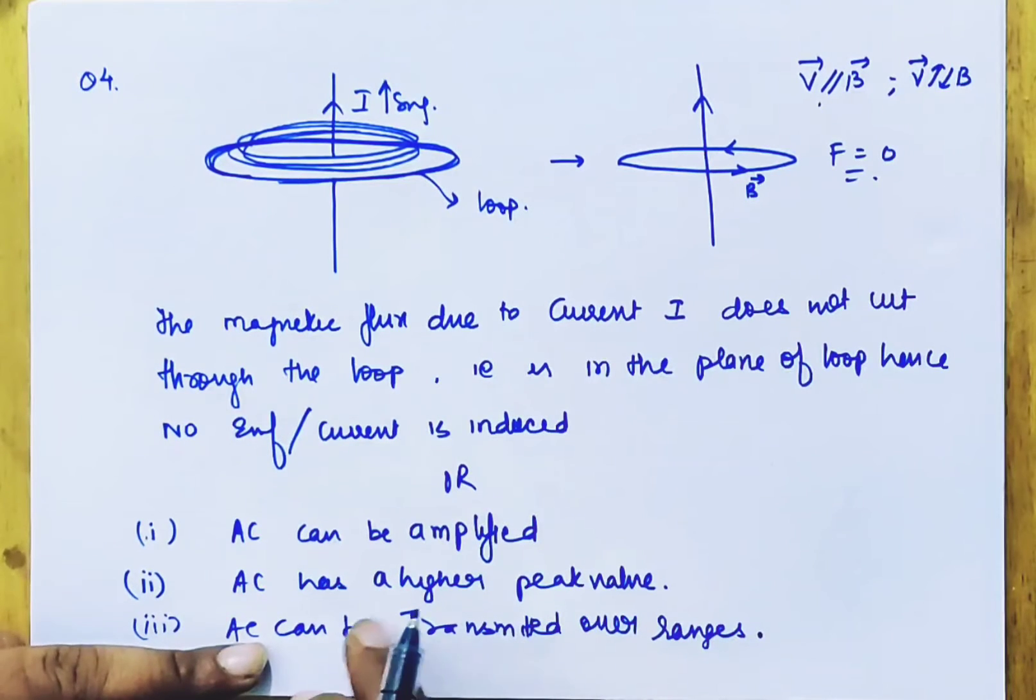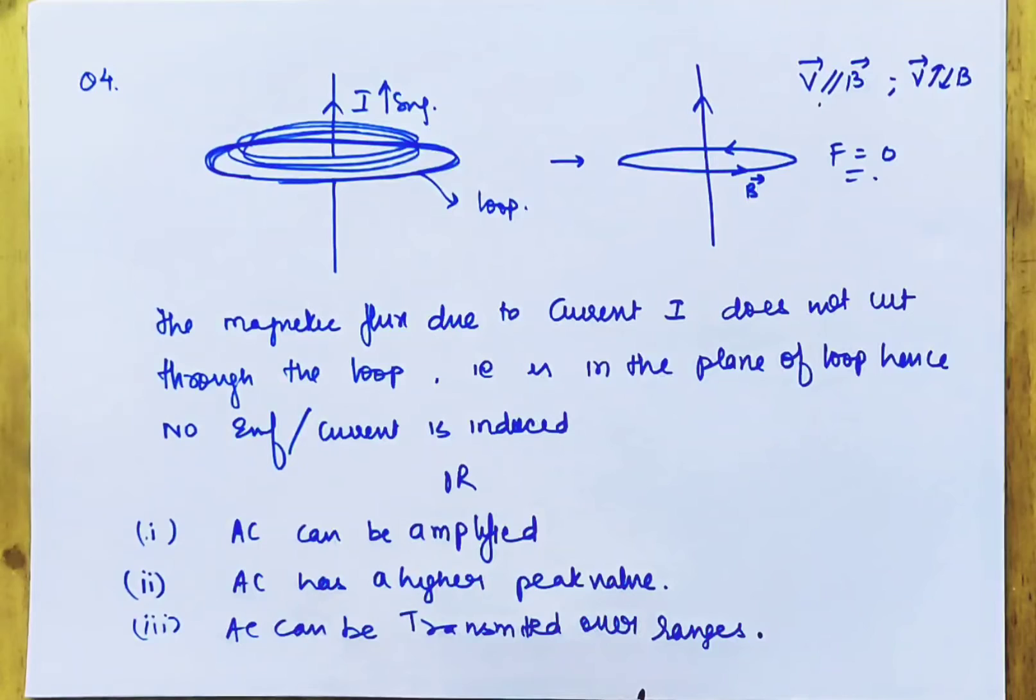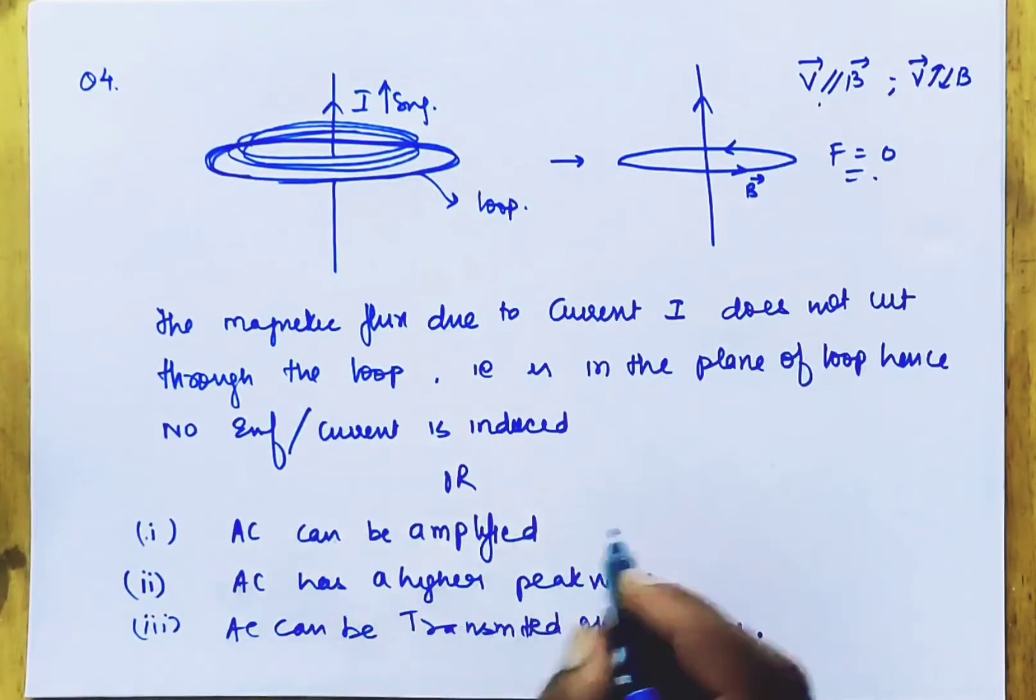Hence the power loss is reduced. If current is transferred at the current level, the energy level will decrease. The power loss is reduced in the long ranges. These are standard answers.